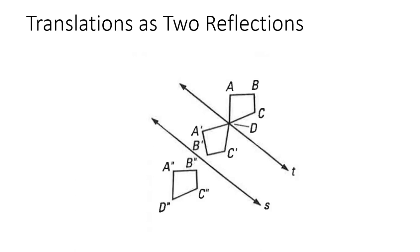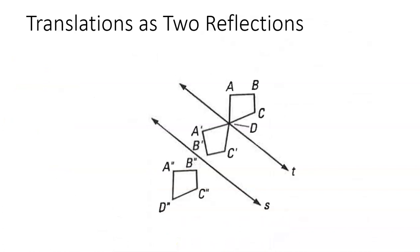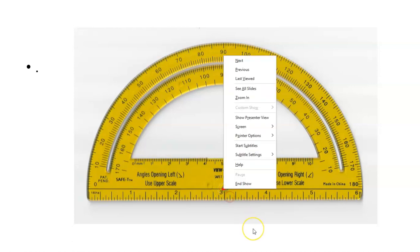What if we think of a translation not as moving by a vector, but as reflecting something twice? Instead of thinking of a translation as going down and over by a certain amount, what if we reflect it across two parallel lines? I'm going to jump ahead for a second — I actually did scan a copy of a protractor.